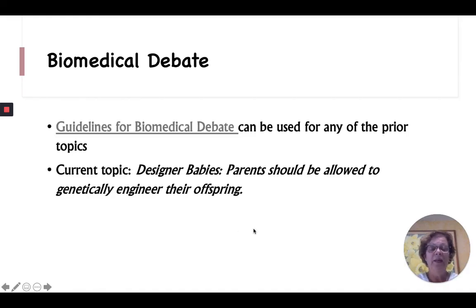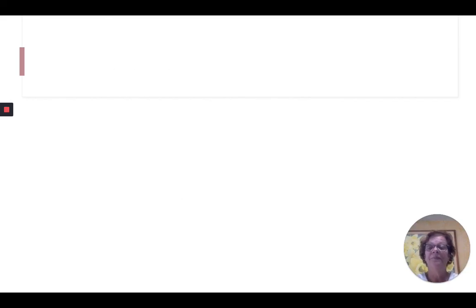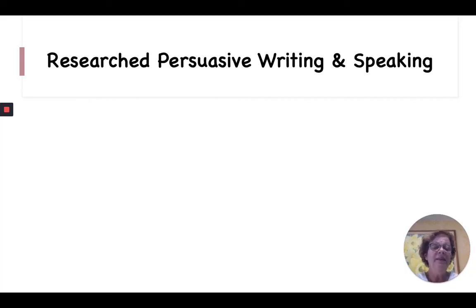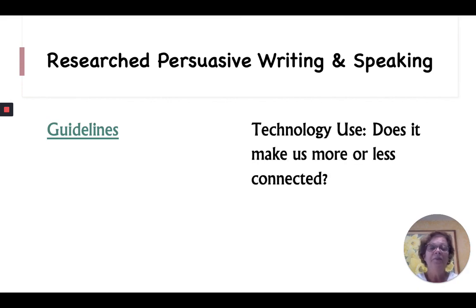The current topic for the 2021 school year is designer babies: parents should be allowed to genetically engineer their offspring. I'd almost guarantee your students will have some opinions on that one. Research, Persuasive Writing and Speaking is another event. The guidelines can be found at www.hosa.org. This year's current topic is technology use — does it make us more or less connected? With what students are going through, many of them not being able to socialize in person since March, I think this is a significant topic. Thank you for your time. We will be sharing these videos and the materials so that you can have them for your classroom. Thank you.